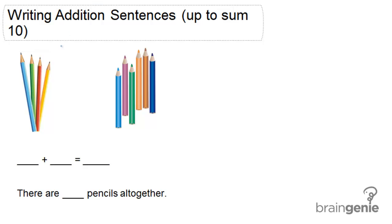In order to write this addition sentence, we first need to identify how many pencils are in this first set. In this first group, we have a certain amount of pencils. Let's count how many: one, two, three, four pencils. So we know that the first group is four.